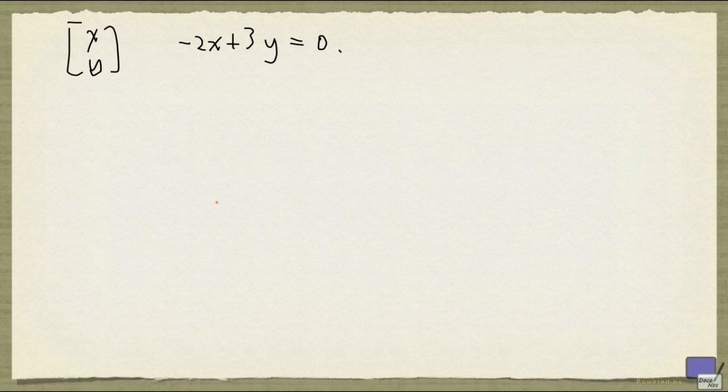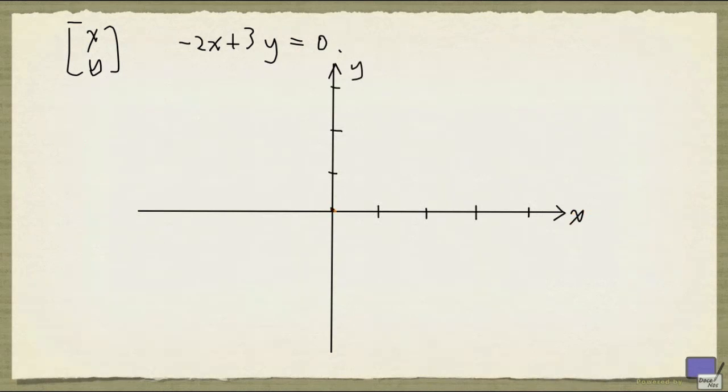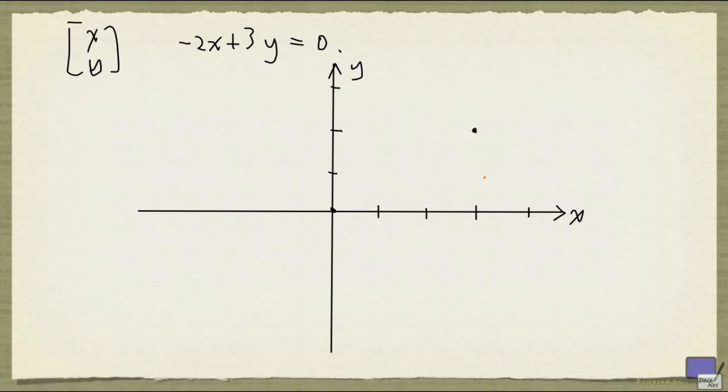We'll begin by looking at this set geometrically. Suppose we're interested in the set of xy satisfying minus 2x plus 3y equal to 0. As you probably know, this is going to define a line on the xy plane. If I have my xy plane here, then I can sketch all the xy satisfying this equation. The origin is on this line, and when x is 3, y is going to be 2. So we can connect these dots with a line.